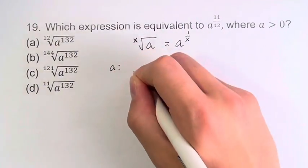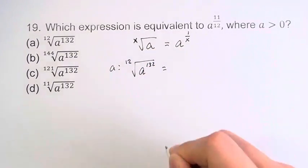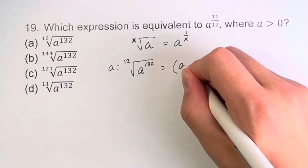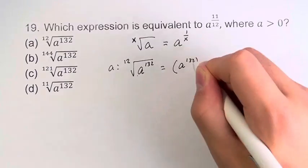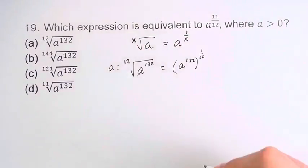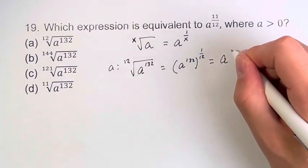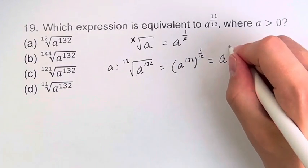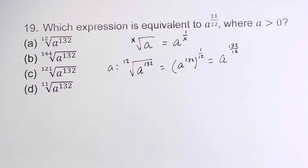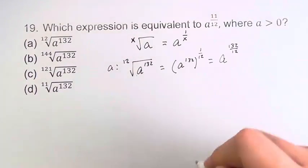For option a, we have the 12th root of a to the 132. This means we're taking the number inside, a to the 132, and taking that to the 1 over 12. When you have one power to another power, you just multiply them. So it's a to the 132 times 1 over 12, which is a to the 132 over 12. You can notice it's a similar form, so we're in the right direction, but this is not equivalent.